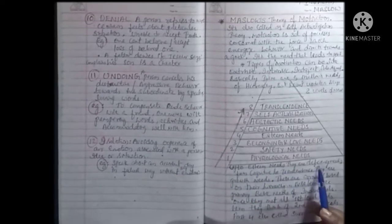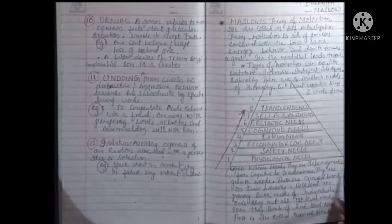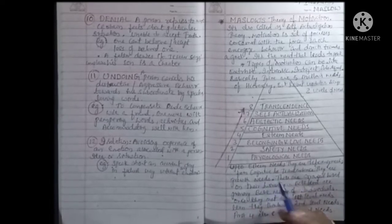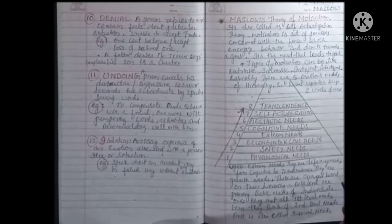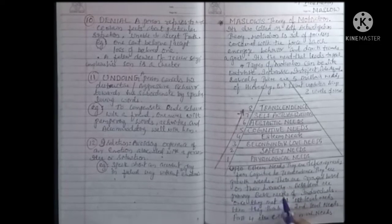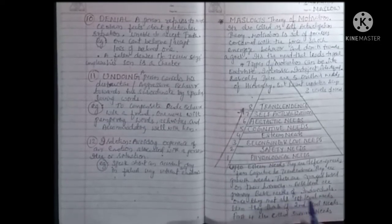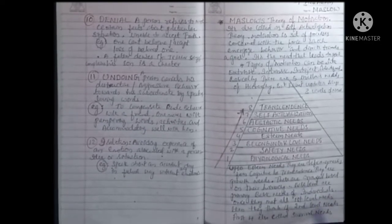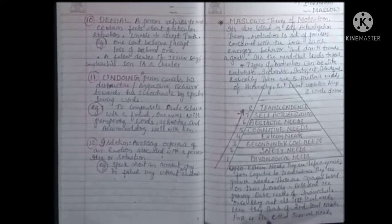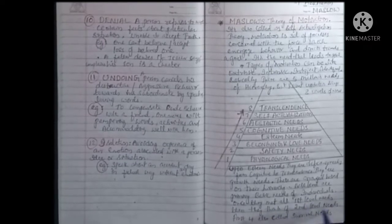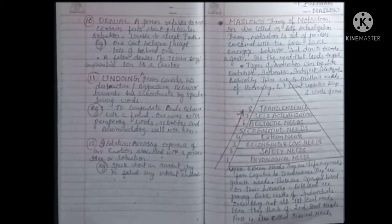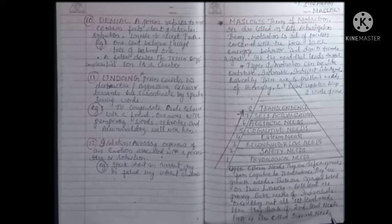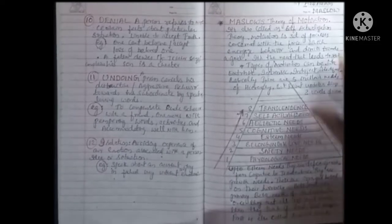Up to esteem needs, they are deficiency needs. From cognitive to transcendence, they are growth needs. So the first four are basic or survival needs. These are arranged based on their hierarchy or importance in our life. The base levels are primary basic needs of individuals. Once they met all the first level needs, then the person thinks of second level needs. The first four are also called survival or essential needs of human beings.